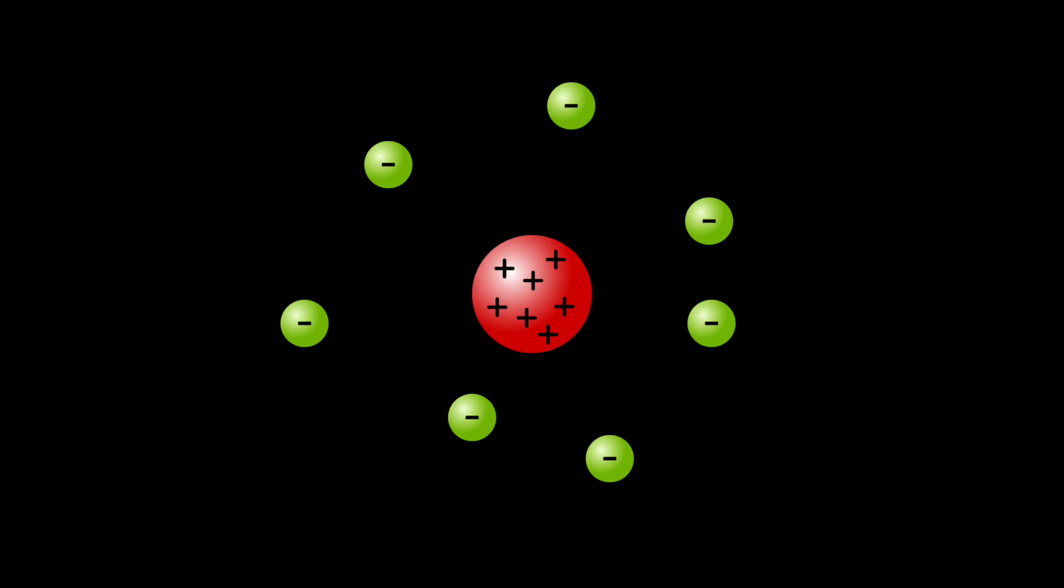Protons were what he discovered, this positively charged nucleus. He found this by doing something called the gold foil experiment, where he shot positively charged alpha particles at a sheet of foil and noticed that some were deflected back.